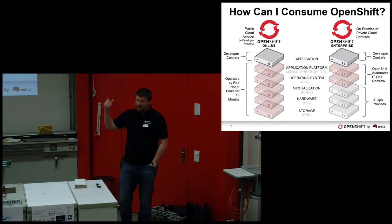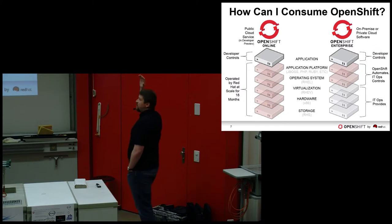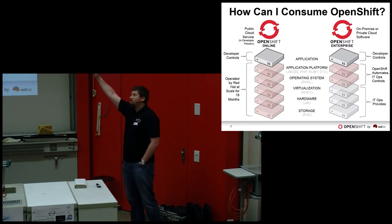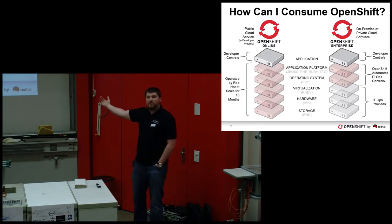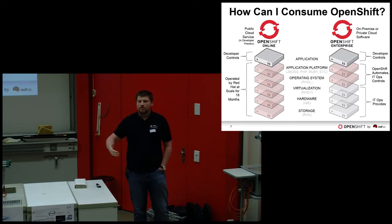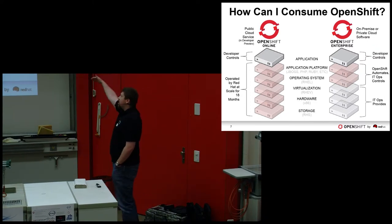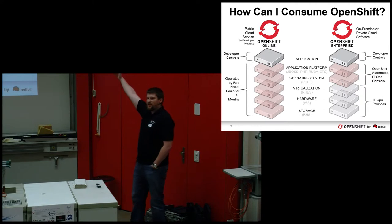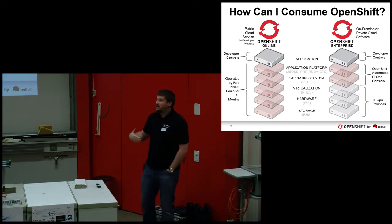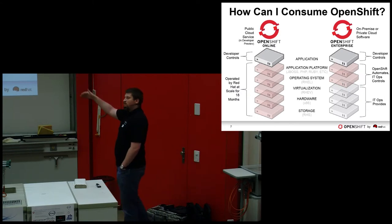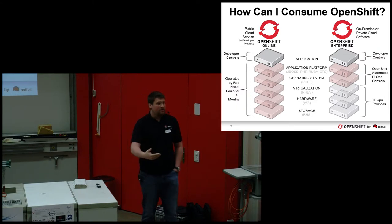You have two ways to deploy OpenShift: either online or with the Enterprise version. In the online version you get almost everything as a service — you push the code and get the application deployed. With Enterprise, you need IT operations to deploy OpenShift for you, and then you provide the same service internally in your company or community where it is needed.